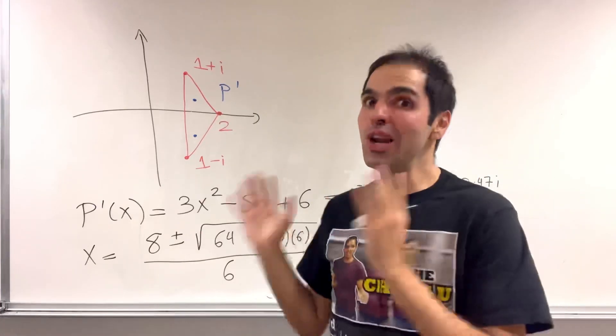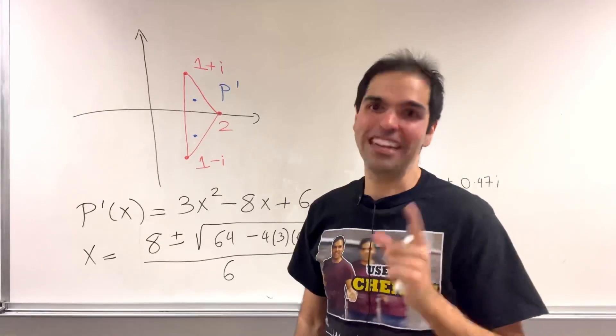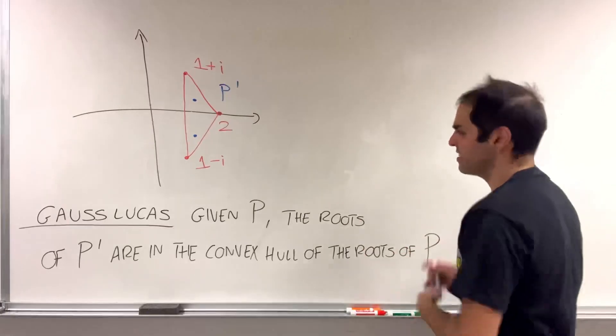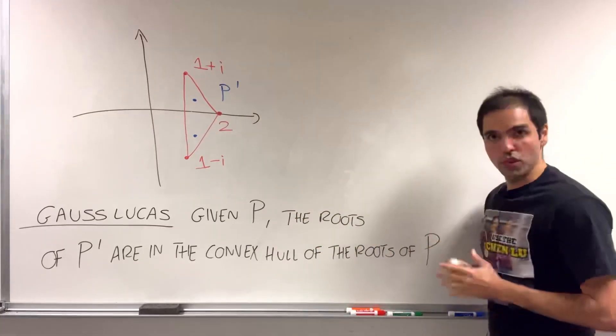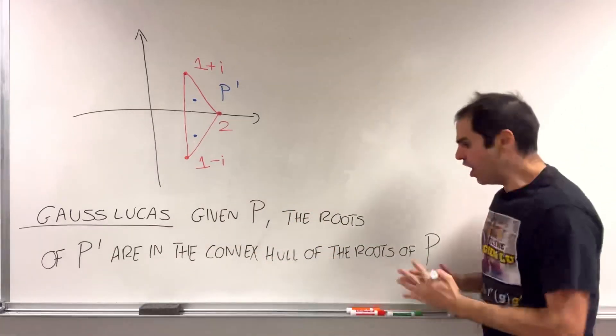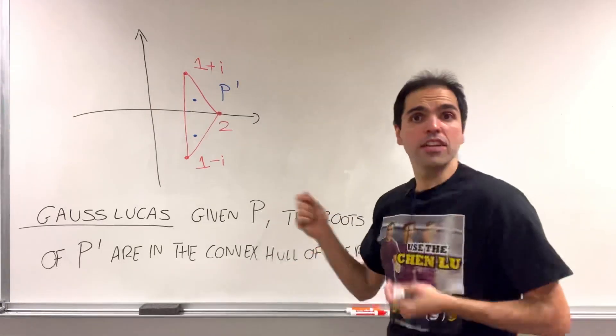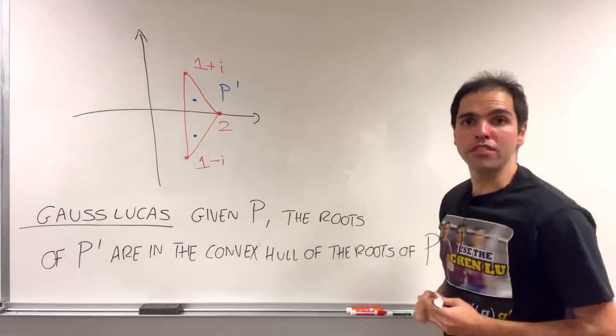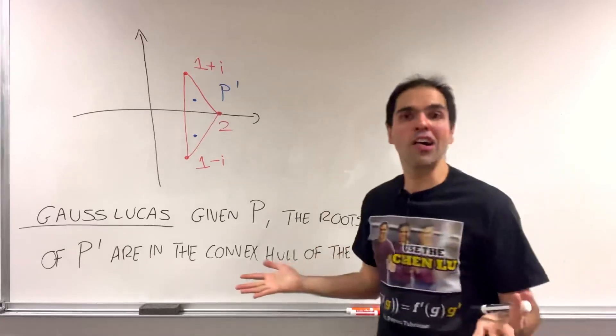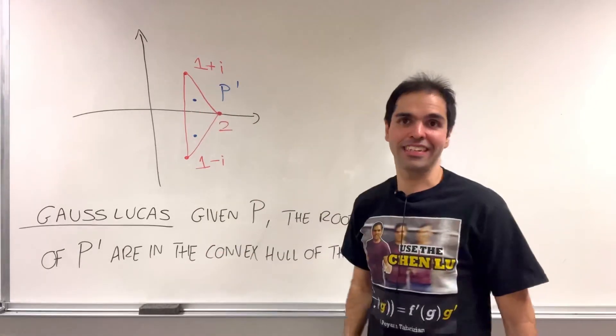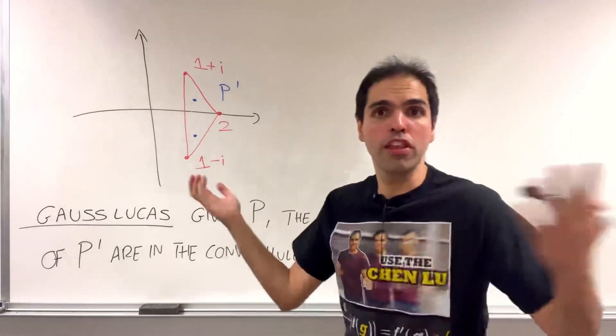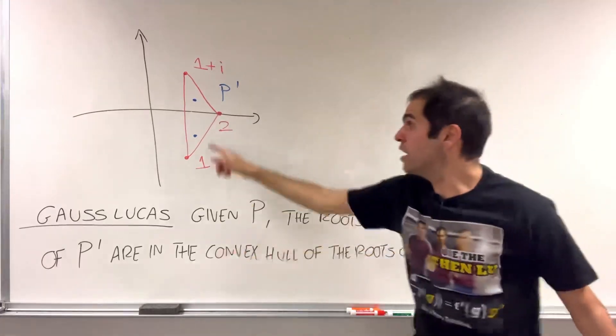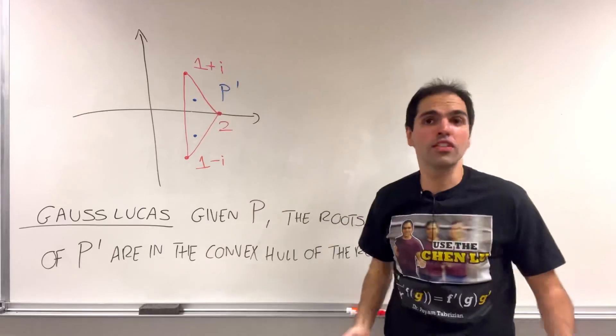It's called the Gauss-Lucas theorem. And by the way, you know it's good when it has Gauss in it, right? What does the Gauss-Lucas theorem say? It says that given a polynomial P, the roots of the derivative are always in the convex hull of the original roots. What is the convex hull? It's just the smallest convex figure formed by the roots. So here we have three points. The convex hull is a triangle. And this theorem says, without even calculating P', we know that the roots are inside that triangle, which, by the way, is super useful in numerics. It says that, well, if you want to look for the roots of the derivative, you don't have to look outside of the triangle. It's precisely in it, or, of course, also on the triangle is also fine.